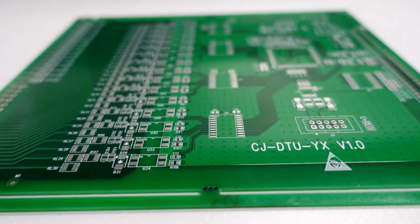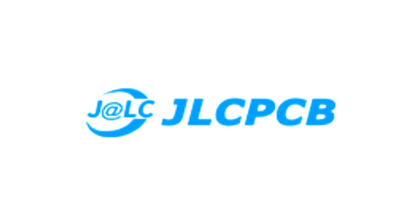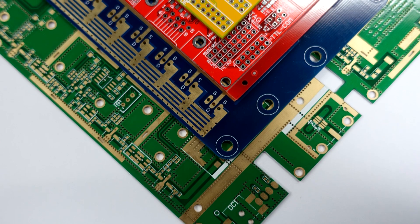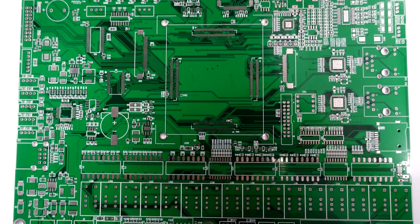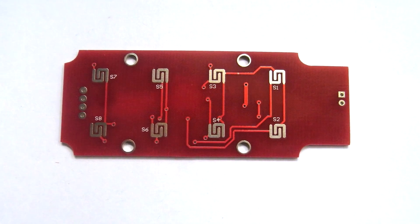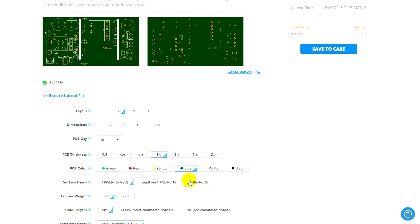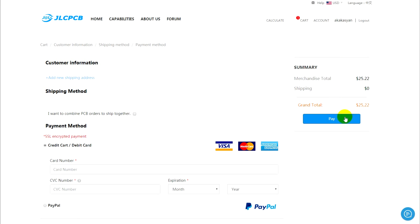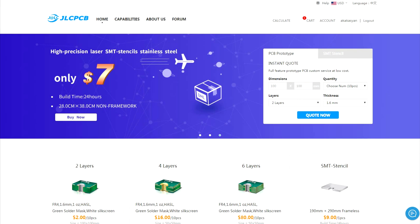You can also order industrial boards of the highest quality from our sponsor JLCPCB. This manufacturer, with many years of experience on the market, will produce printed circuit boards of any complexity and size for you in the shortest possible time. Just download the board file, select the desired option, and that's all. Also, free shipping on the first order is available. A link to JLCPCB website can be found in the description under the video.